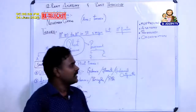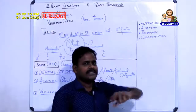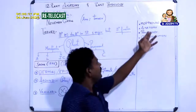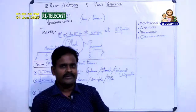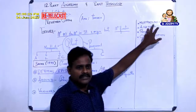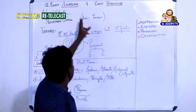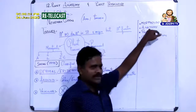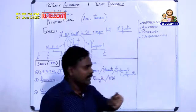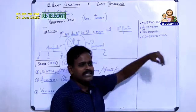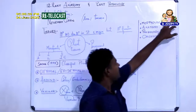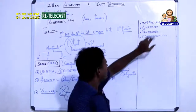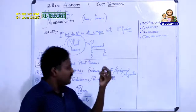Anatomy is the study of internal structure. When I study about the heart, lungs, liver, or kidney, that is anatomy. Similarly in plants, we are going to learn about anatomy — that is the internal structure found inside the root, inside the stem, inside the leaf, and so on.